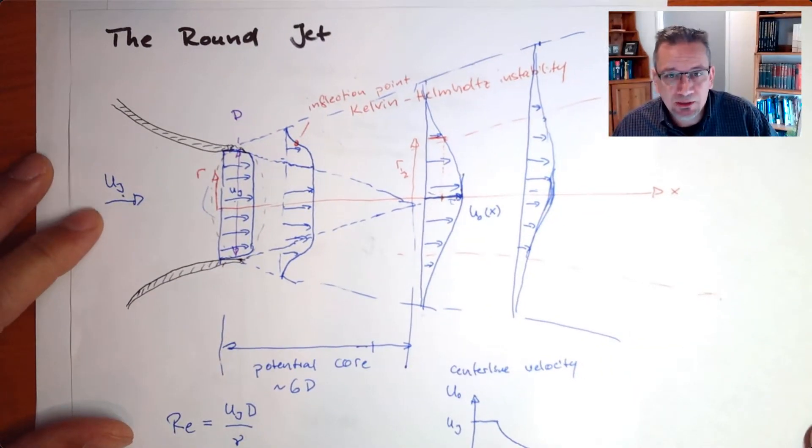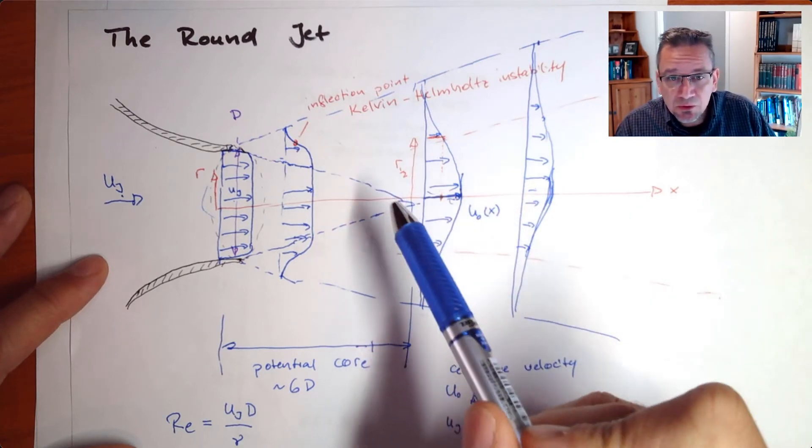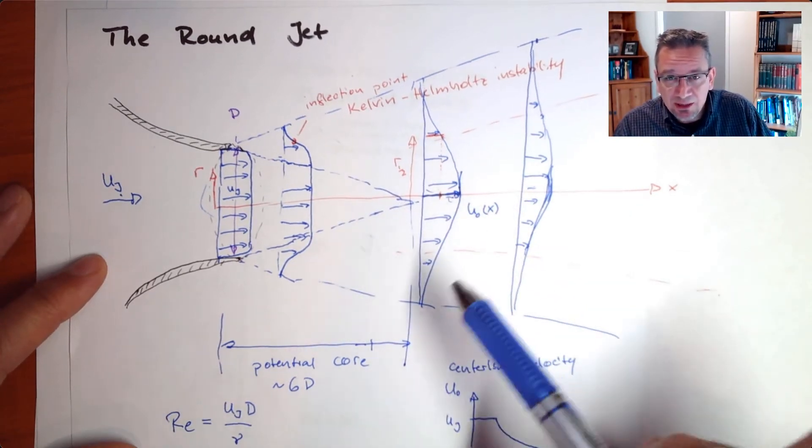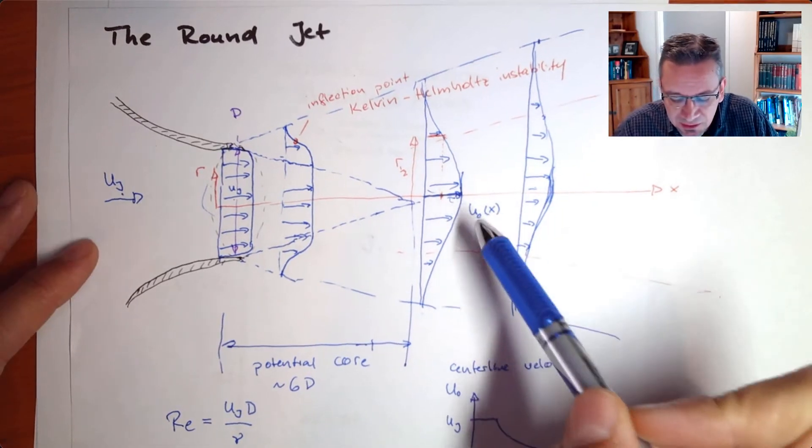Let's have a look back at our round jet and how we can make that self-similar. What we need is a characteristic length scale and a characteristic velocity in this case.